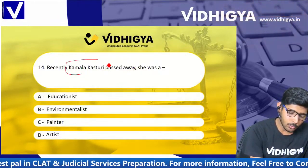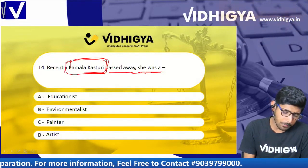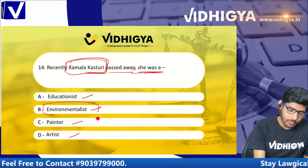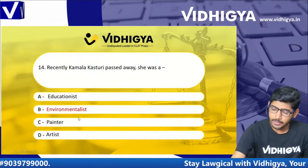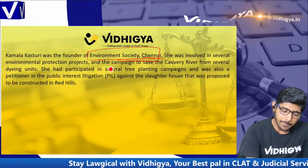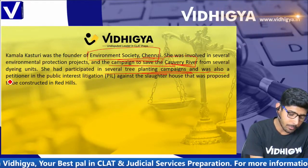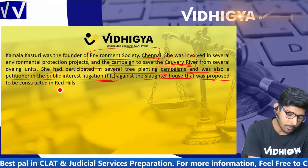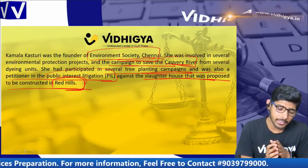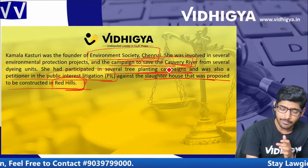Recently, Kamla Kasturi passed away. Which profession was she related to? Options are: educationist, environmentalist, painter, and artist. The correct answer is environmentalist. Kamla Kasturi was an environmentalist who founded an environmental society. She ran several campaigns, including campaigns to save the Cauvery River, participated in tree planting campaigns, and was also a petitioner in a PIL against a slaughterhouse proposed to be constructed in Red Hills.